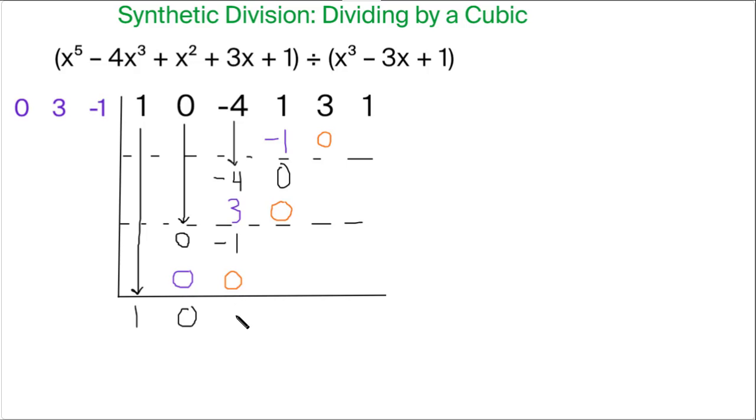So negative 1 and 0 adds to negative 1, 0 and 0 adds to 0, and 3 and 0 adds to 3.